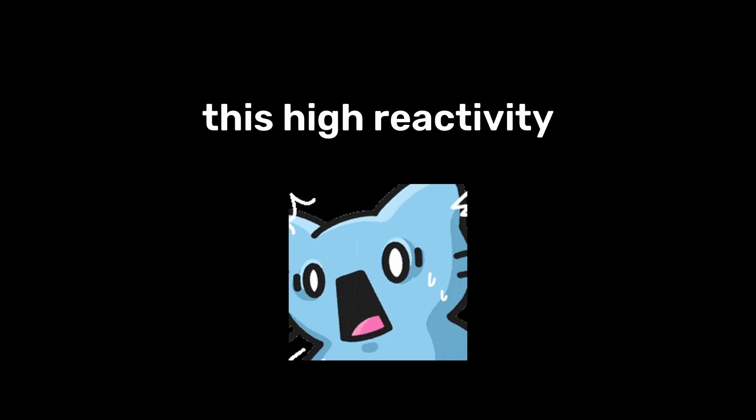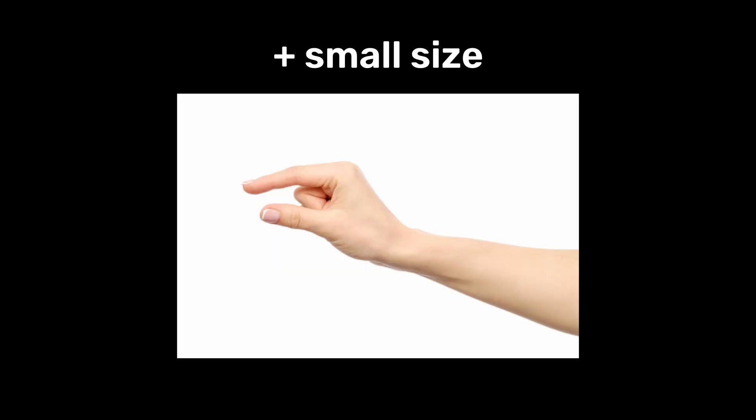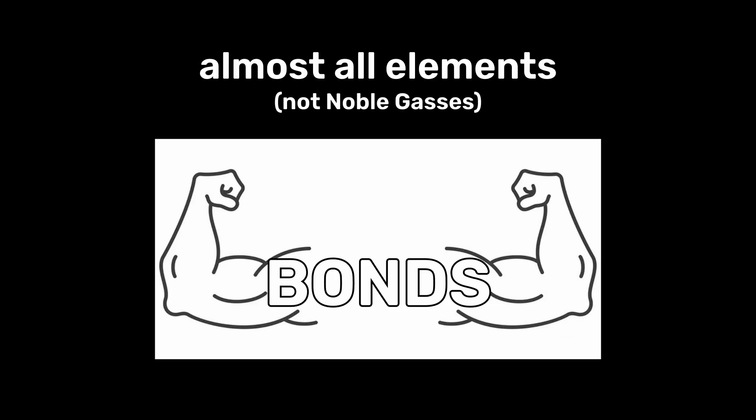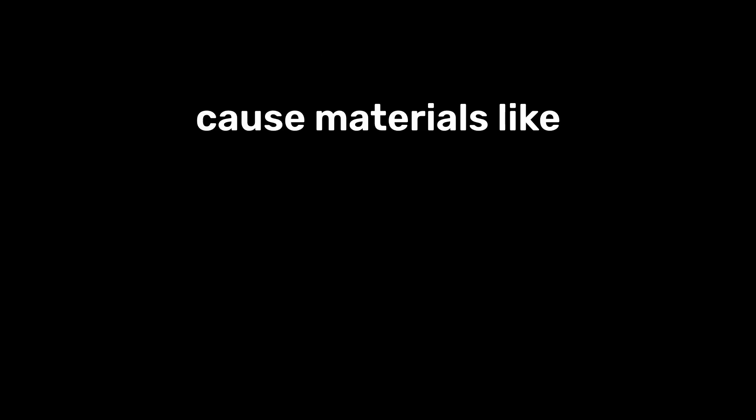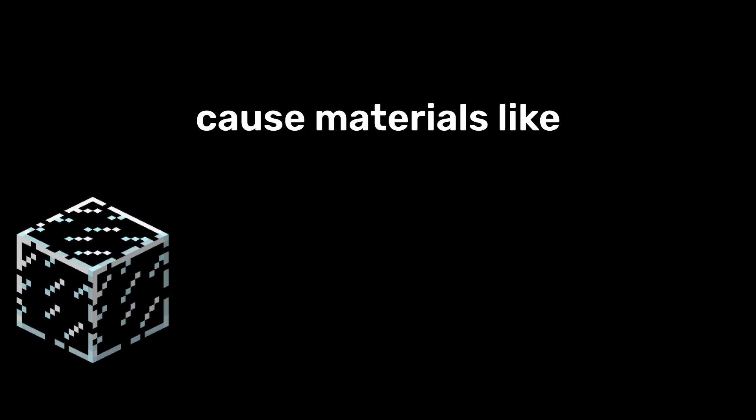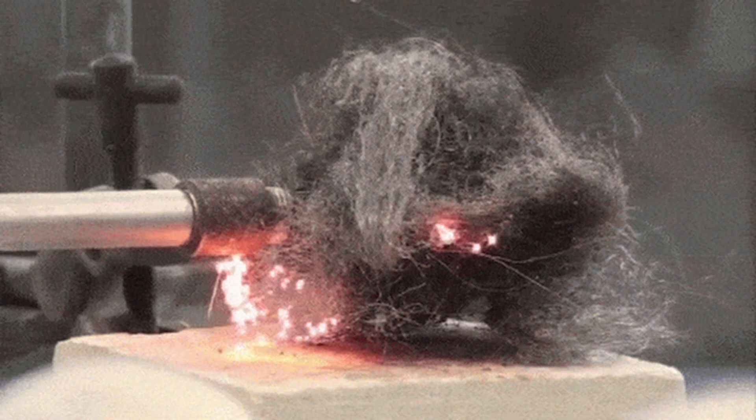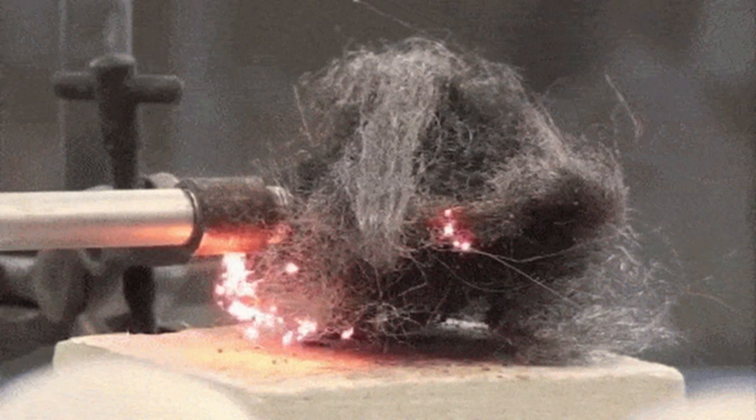This high reactivity and small size allows fluorine to form strong bonds with almost all elements, and fluorine gas is so reactive it can cause materials like glass or steel to burn spontaneously on contact.